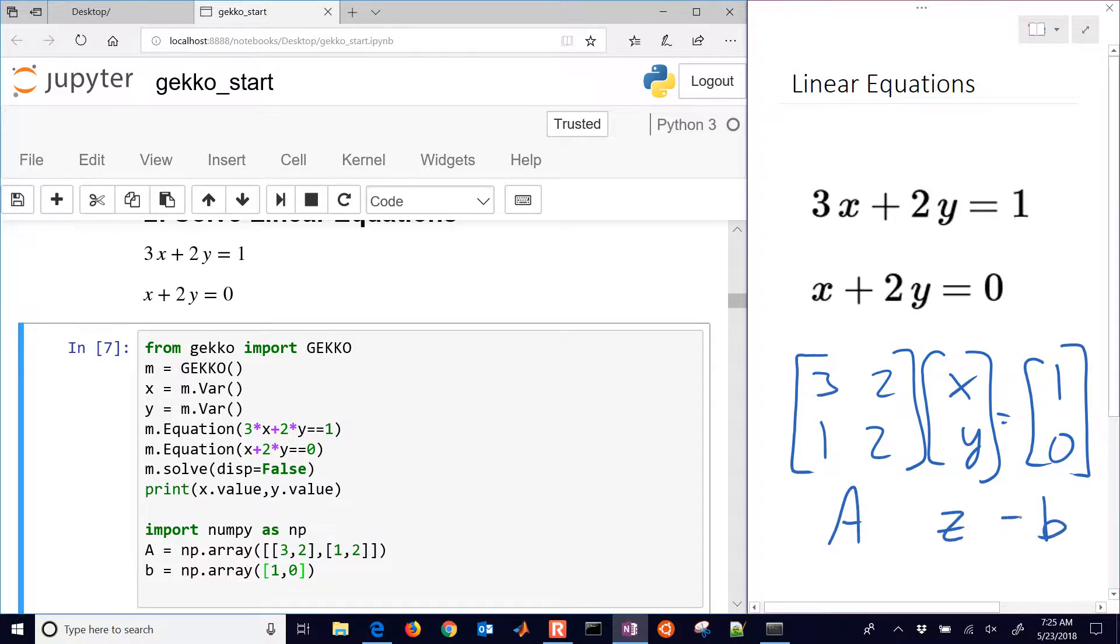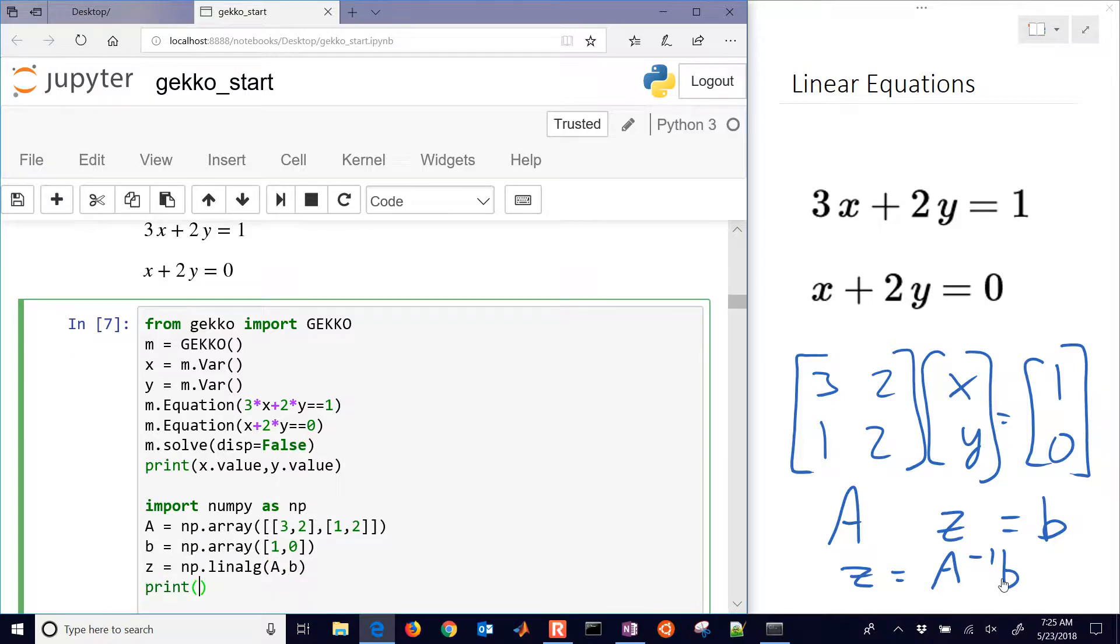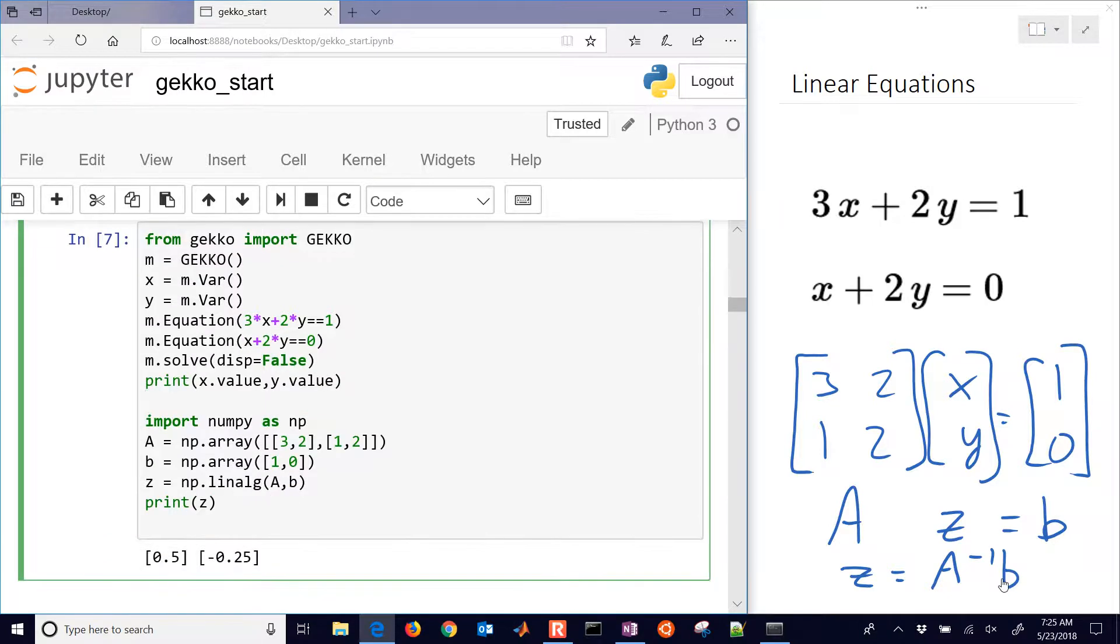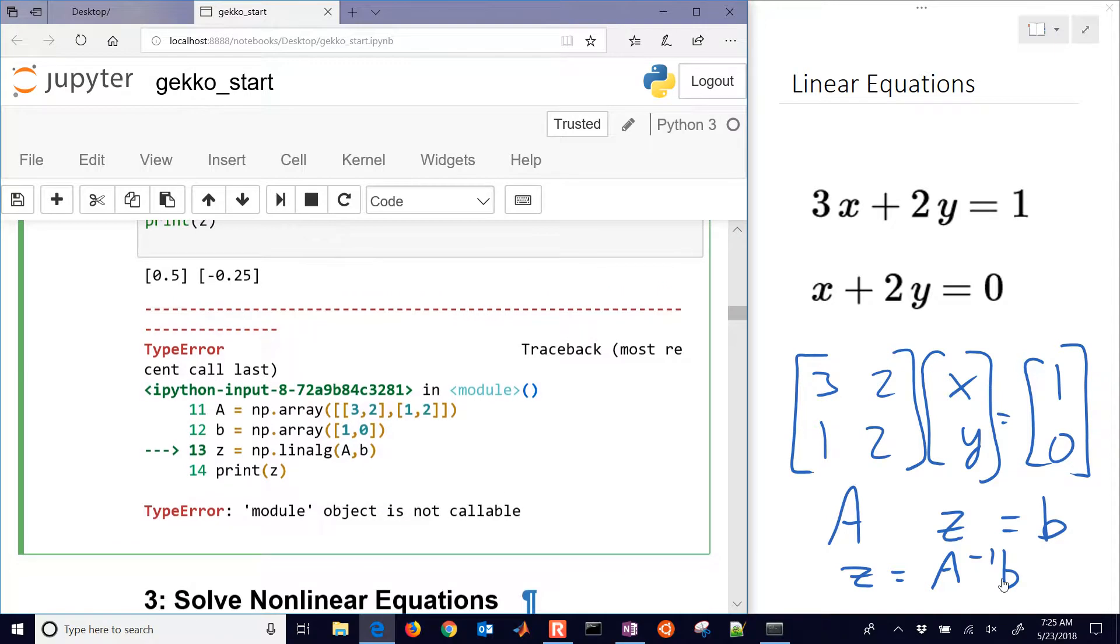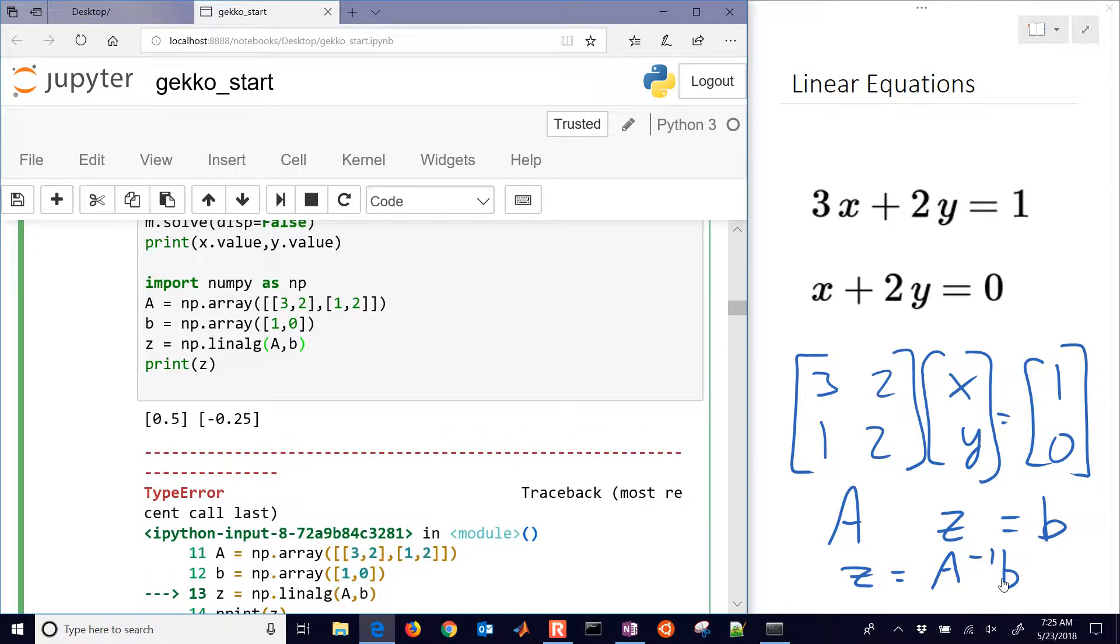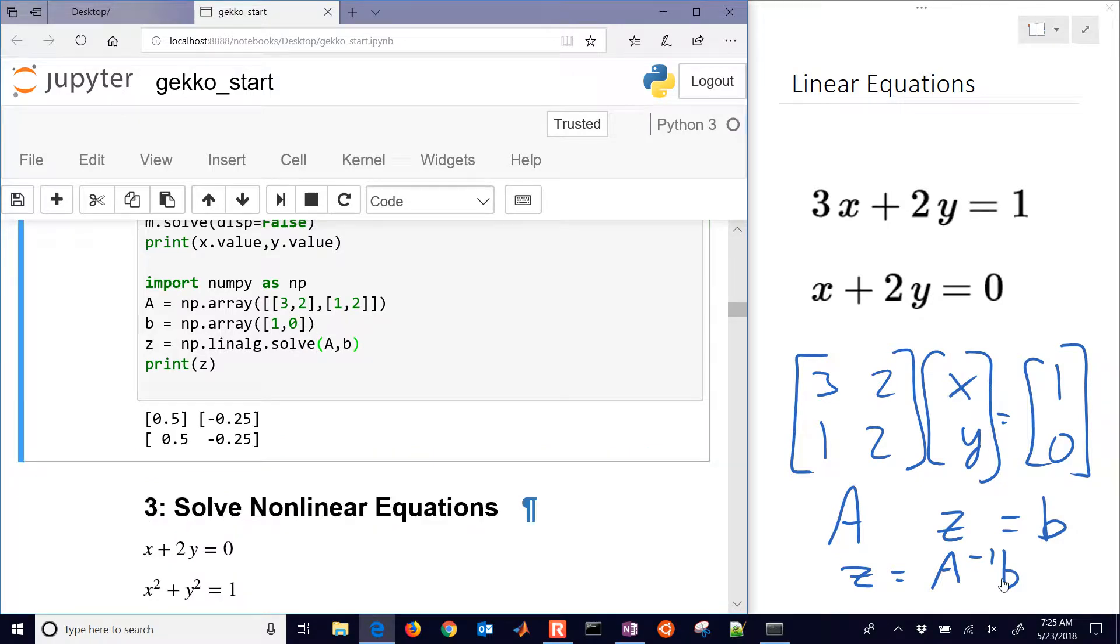So this is a times, I'll say z, equals b. And then we can solve this with z equals a inverse times b. Or we can use the numpy lin-alge package, the np lin-alge, and do a, comma, b. And then we'll print our z value. And if we run this one, I get an error. The module is not callable. Oh yes, so lin-alge.solve, and there I get my solution that I had before from Gecko.